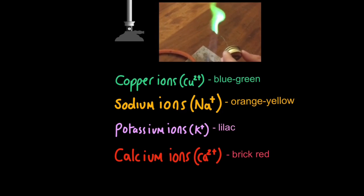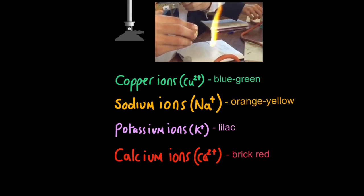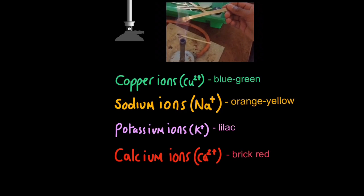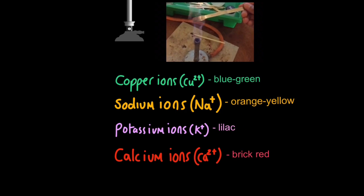Different metal ions will change this flame different colors. Here are the ones you need to know. Copper turns the flame bluish green, so copper ions turn it blue green. Sodium ions turn the flame orangey yellow. Potassium ions change the flame a lilac, a purpley lilac color. You say lilac. And I couldn't get calcium but calcium ions turn the flame brick red. These are the four you must commit to memory.